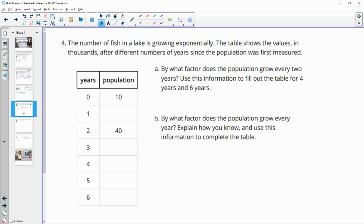Number four, the number of fish on a lake is growing exponentially. The table shows the values in thousands after different numbers of years since it was first measured. By what factor does the population grow every two years? So we can just take the new population divided by the original and we get that growth factor is four. So now it's growing by four every two years.